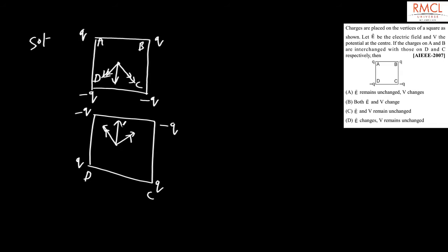What about the potential? Before interchanging, the potential at the center is due to Q at A, Q at B, -Q at C, and -Q at D. After interchanging, the potential remains the same because the distances from each vertex to the center are equal, and the same set of charge magnitudes are present. So the potential at the center remains unchanged.